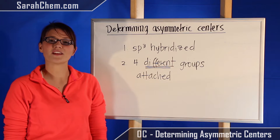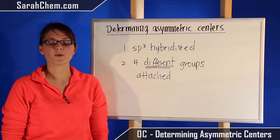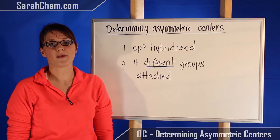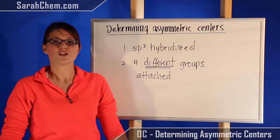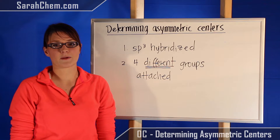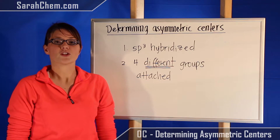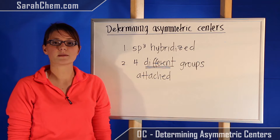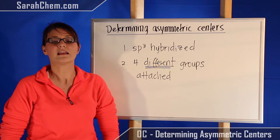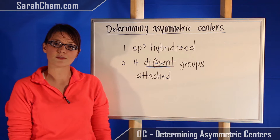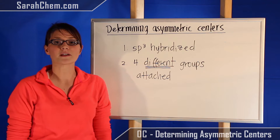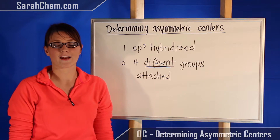Hi everyone! This is a video tutorial to help you understand how to determine if a compound has an asymmetric center. The first thing is just to define an asymmetric center. An asymmetric center is going to be a carbon specifically in a compound that is sp3 hybridized and has four different groups attached to it.